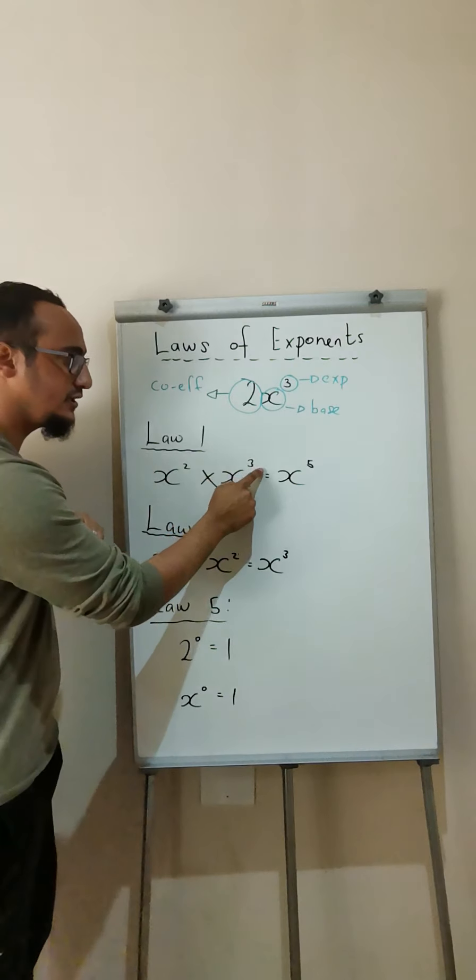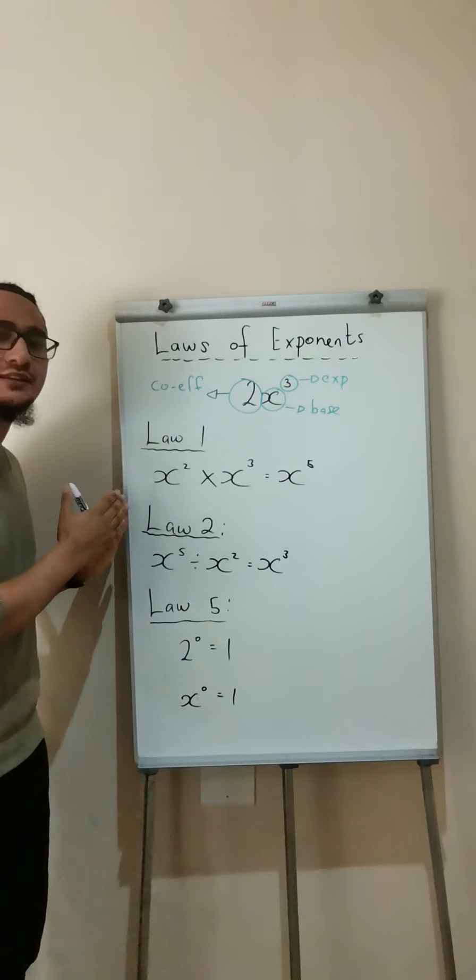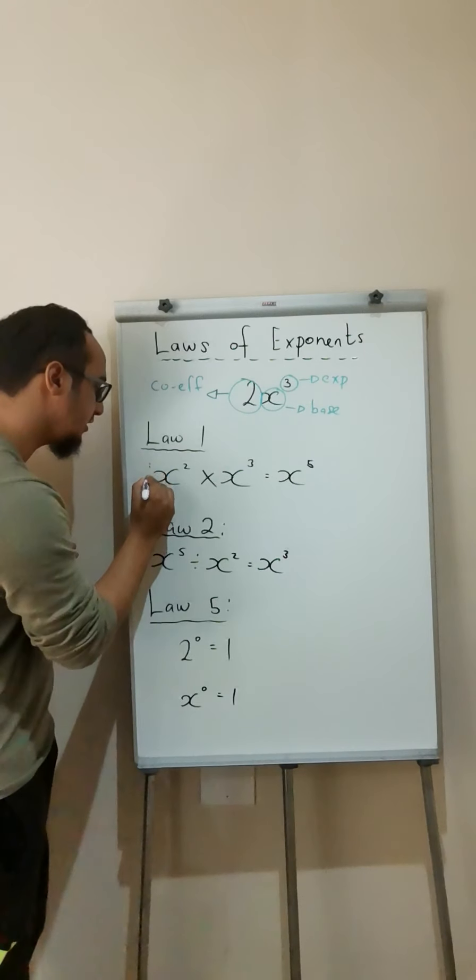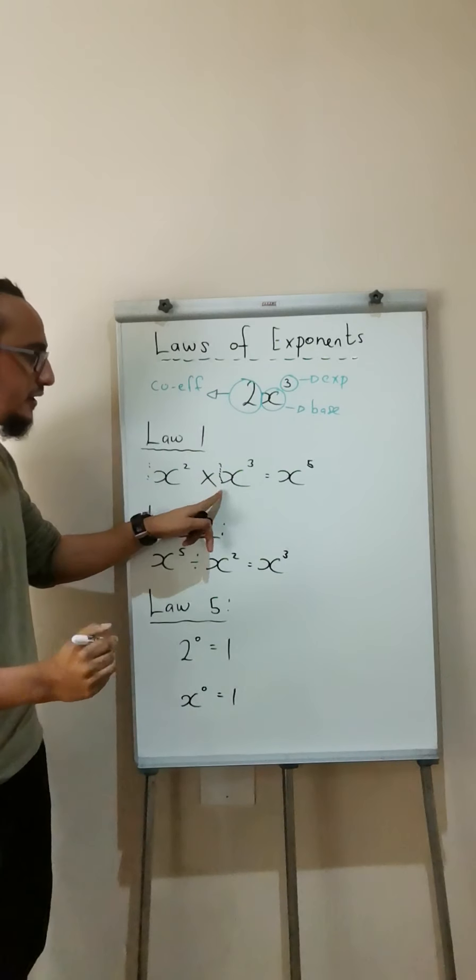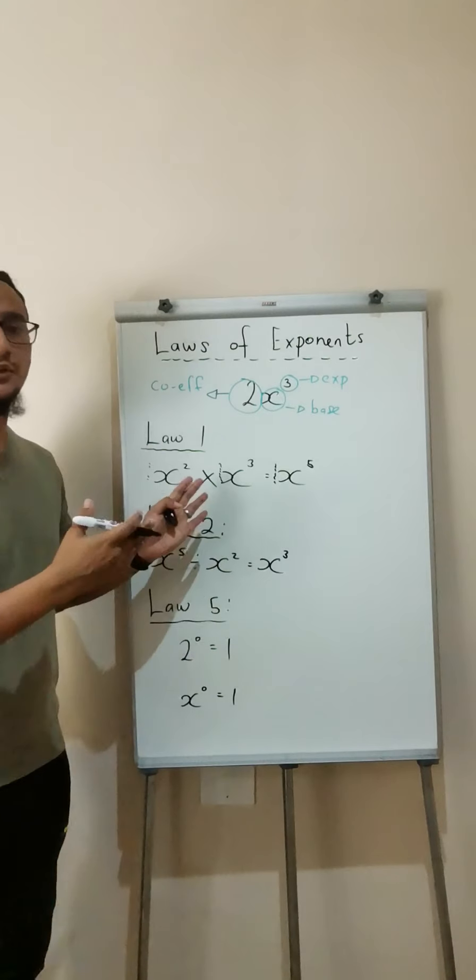So 2 plus 3 is equal to 5. Now don't forget, in front of my letter there is no number, right, but that is known as your imaginary 1. And 1 multiplied by 1 will be equal to 1. Do I need to write the 1? No, I don't.